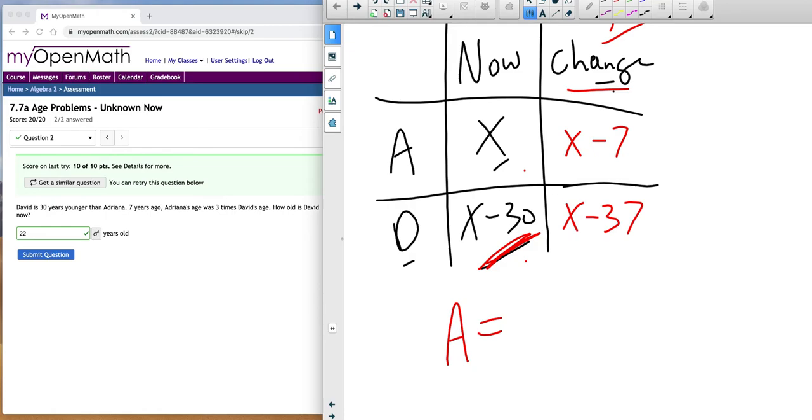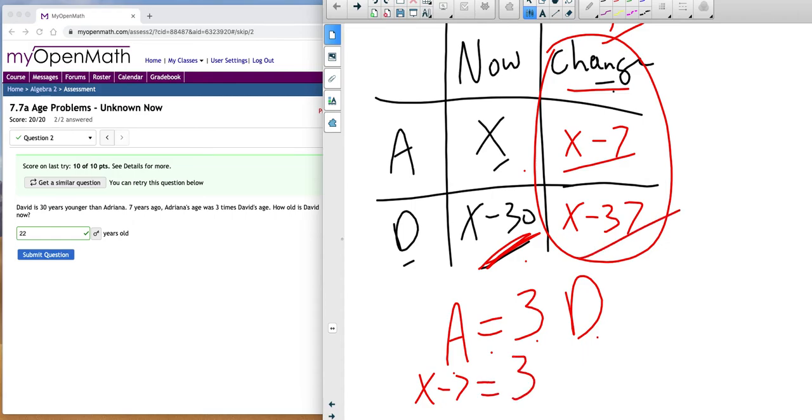All right, this one's more of an equation for the next part. It says Adriana was—was, was, was means equal—three times David's age. Okay, seven years ago Adriana was equal sign three times David's age. So we use the change column, and for Adriana we put x minus seven, and for David we put x minus 37.